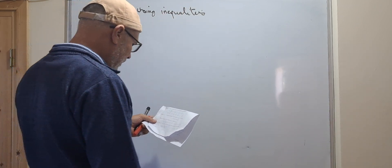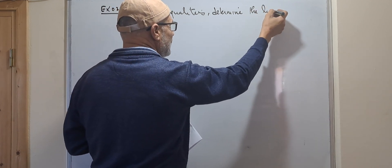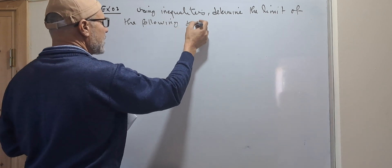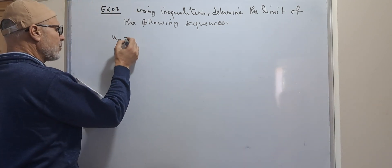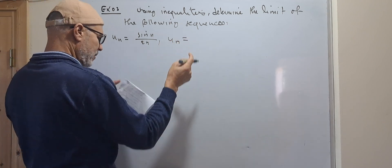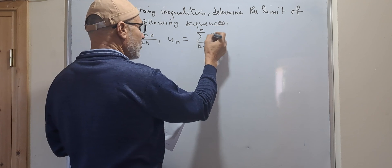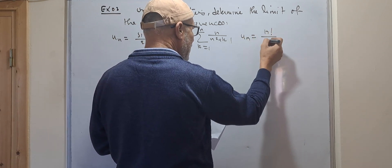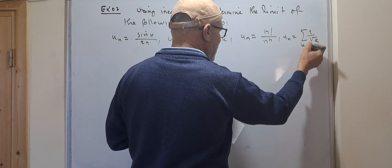Using inequalities, determine the limit of the following sequences. First one: u_n equal to sin(n) over 2n. The second one: the sum from k equal 1 to n of n over n squared plus k. The third one: u_n equal to n factorial over n to the power n. The fifth and last one: the sum of 1 over the square root of k, k equal 1 to n.